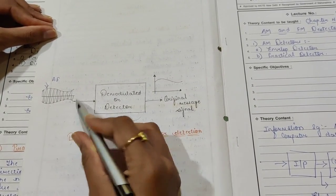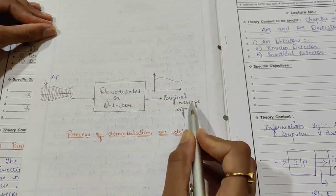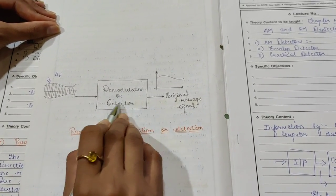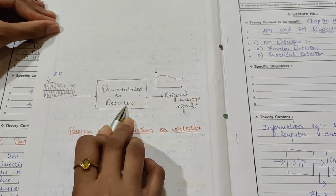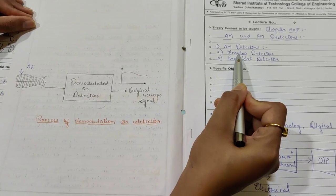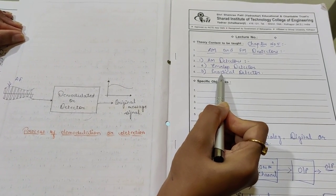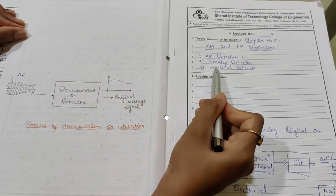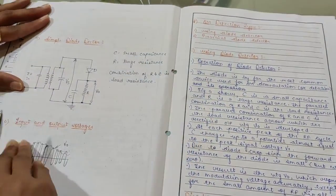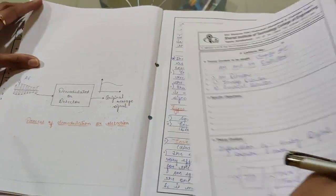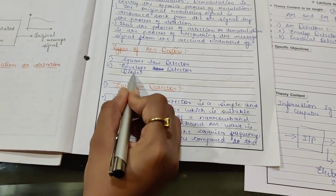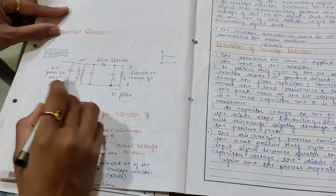This envelope is given to the demodulator or detector, and in return we get the converted main message signal. This conversion of the main message signal is done by the block called the demodulator or detector. This block consisting of the demodulator or detector comes in two types: the first is the envelope detector and the second is the practical detector.